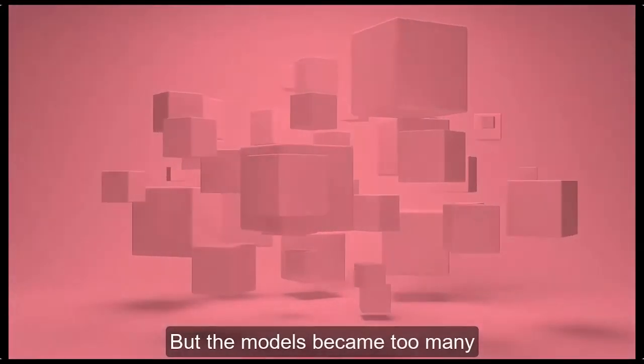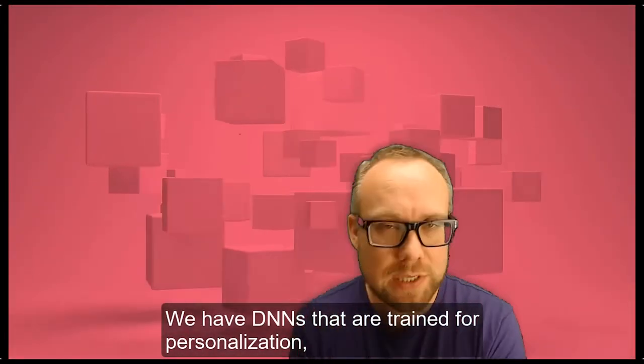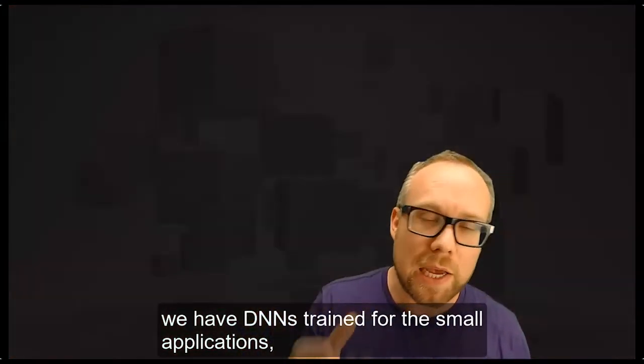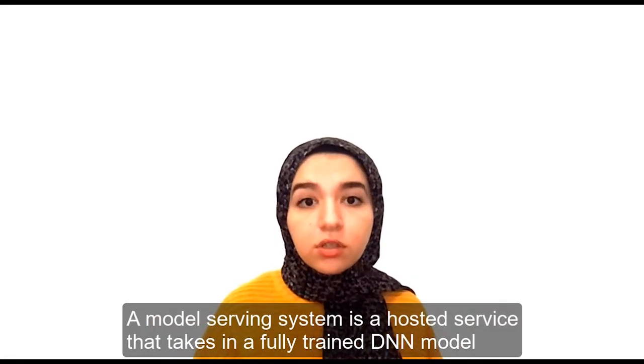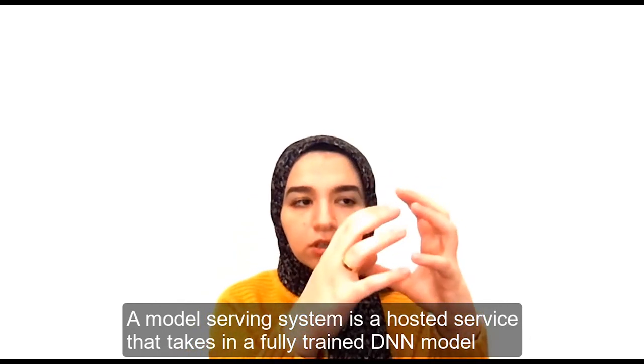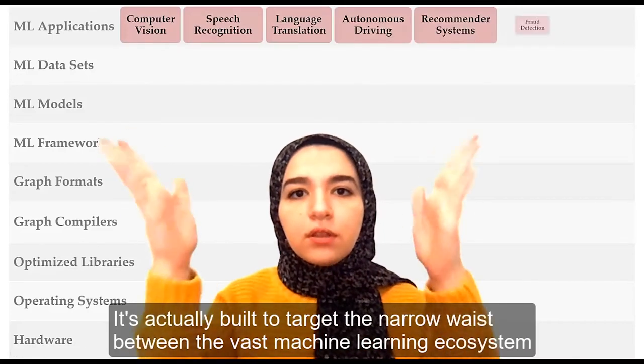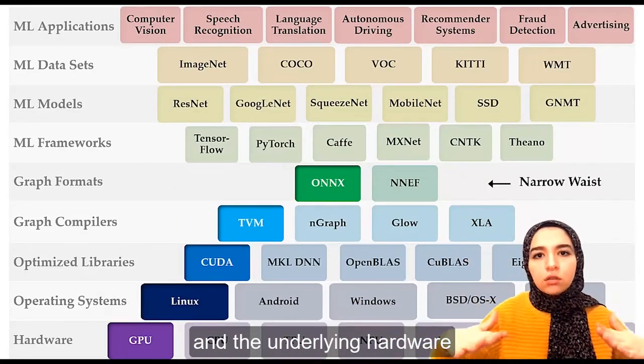But the models became too many. We have DNNs trained for personalization, big applications, small applications, and A-B testing. So model serving systems were built. A model serving system is a hosted service that takes in a fully trained DNN model and serves inferences made to that model. It's built to target the narrow ways between the vast machine learning ecosystems and the underlying hardware.